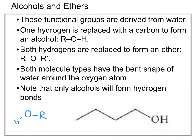In an ether, both of the hydrogens are replaced by some sort of carbon-containing compound. We see here that an ether will be some sort of carbon group, with a carbon connected to an oxygen, and then on the other side of the oxygen is another R-group of some other sort of carbon chain. In both cases, the molecule will have the same bent shape that water has around the oxygen atom. Note that when we're thinking about intermolecular forces, only alcohols will be capable of forming hydrogen bonding, since they have an oxygen directly bonded to a hydrogen. Ethers will not be able to form hydrogen bonds, since they consist of oxygen bonded to carbon atoms rather than oxygen bonded to hydrogen.